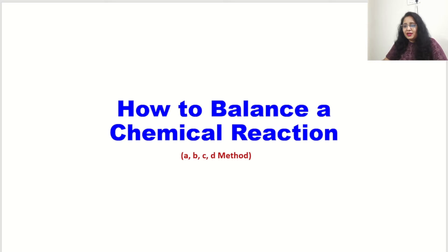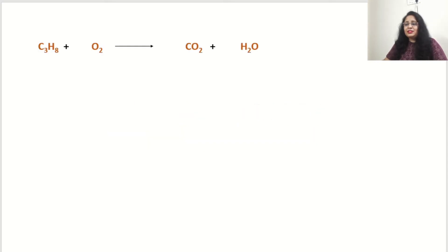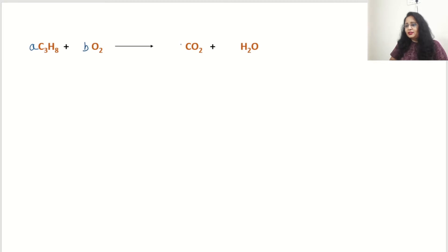In this ABCD method, we will use the variables A, B, C, and D as coefficients. For the combustion of propane, A is the coefficient of C3H8, B is the coefficient of O2, C is the coefficient of CO2, and D is the coefficient of H2O.